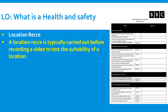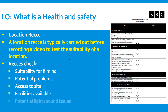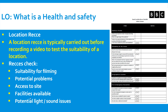A location recce is used before recording video. Big companies such as the BBC and ITV use them. They check that where they're filming is suitable, whether there are any problems with the location, whether it is easy to access, and what facilities are available such as toilets.